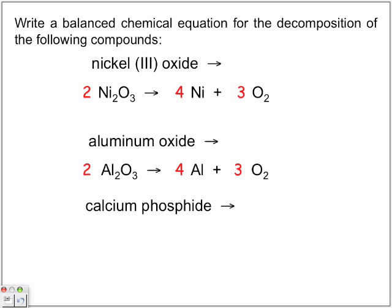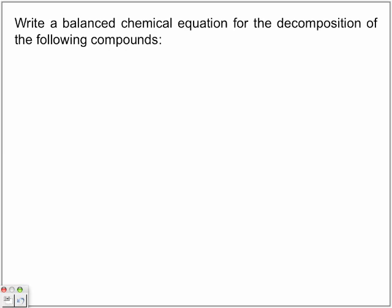Calcium phosphide. Again, same thing. Five-step crossover rule because we have a metal and non-metal. So, calcium phosphide is put together with the following formula, Ca3P2. And it's going to be broken down into calcium and phosphorus. Neither one is diatomic. Now, the only thing that's left is balancing it.